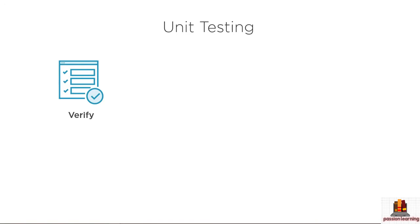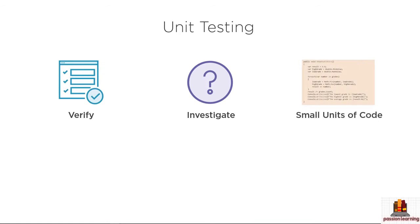Not just testing what we call the happy day scenario, where the user behaves the way we expect, but also testing to explore and see how the software behaves when things go wrong — when the user forgets to enter a grade or enters an illegal value. So that's testing. And then what is a unit? A unit is the source code that we want to test. We want to test small units of code — in C#, we might test the code inside of an individual method, and that method will be the unit.